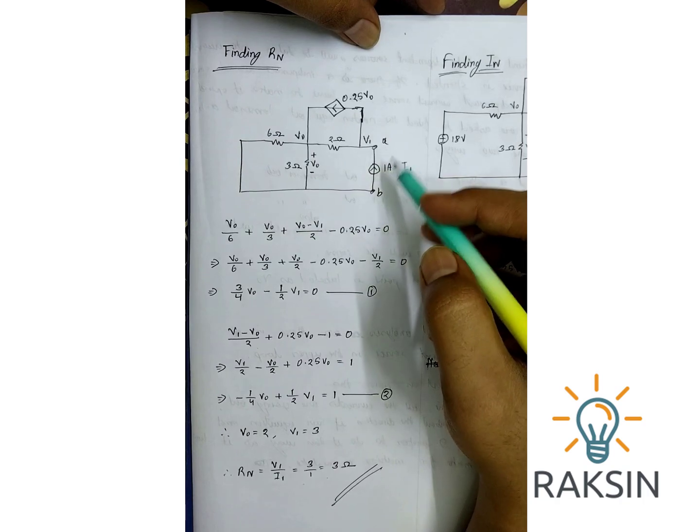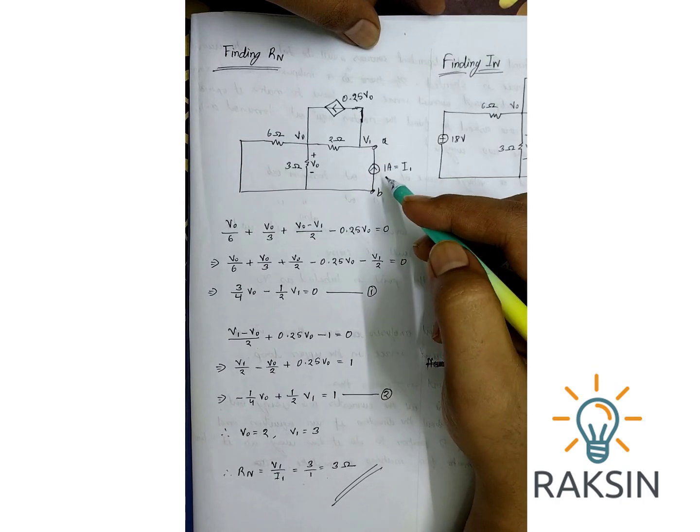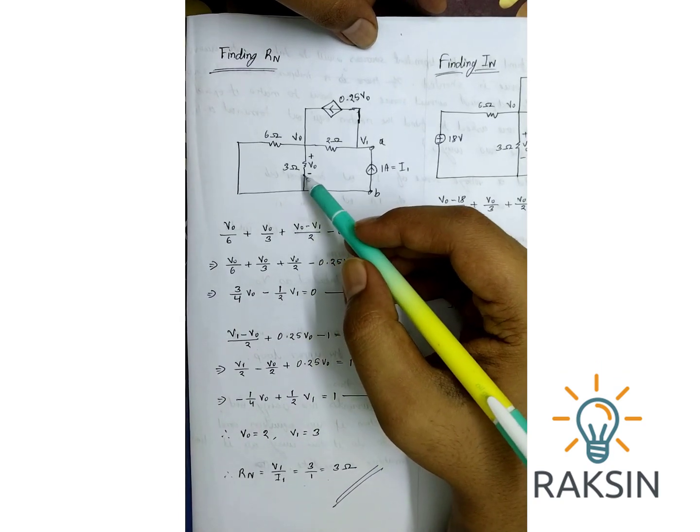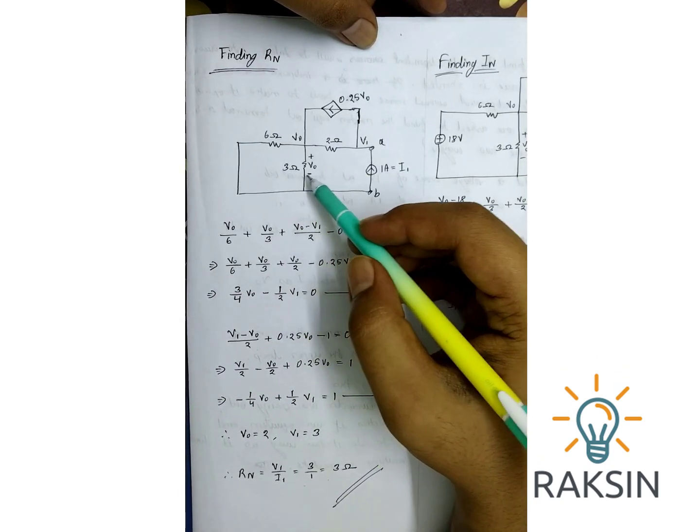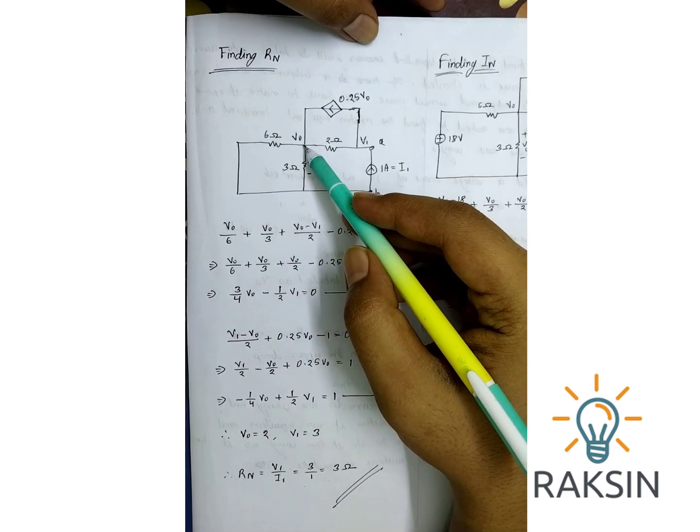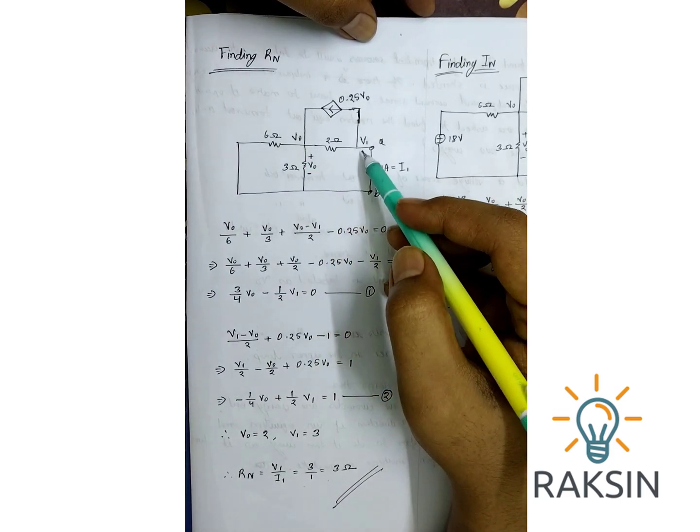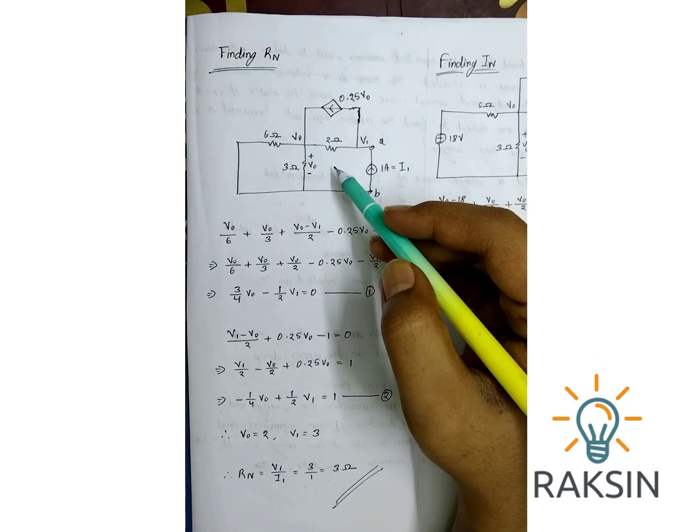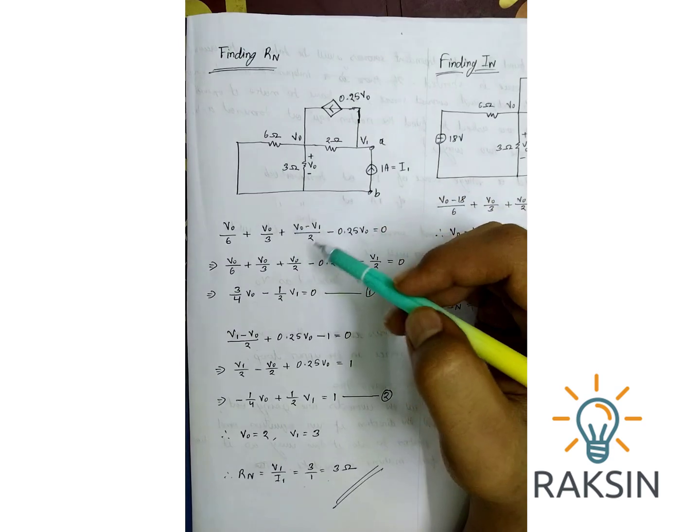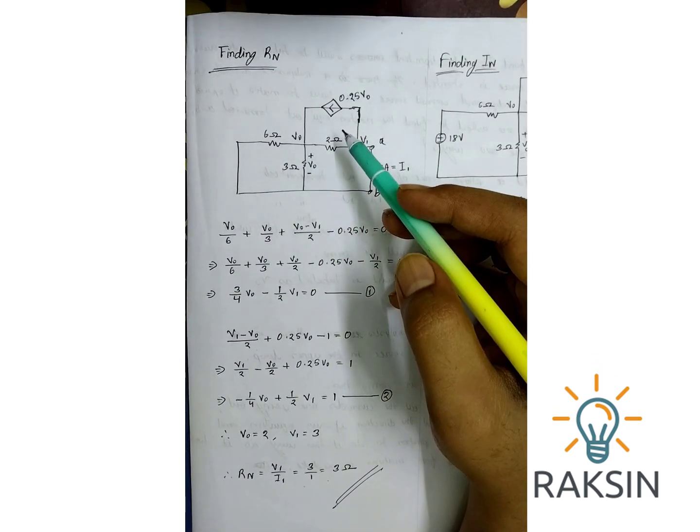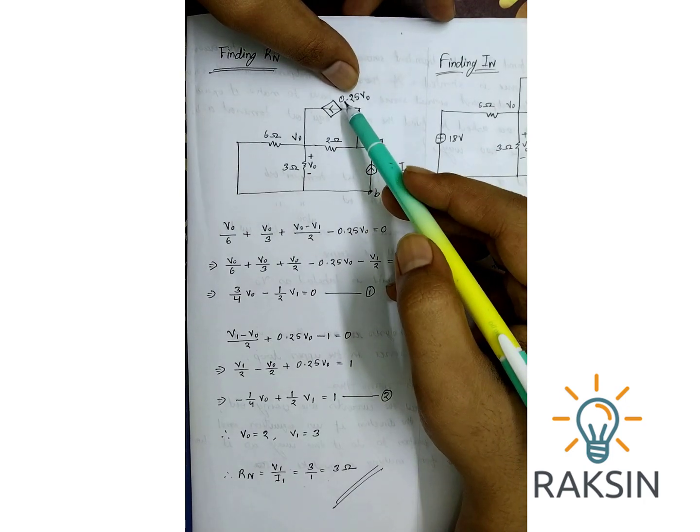We can see the voltage of this 3 ohm resistance is labeled as V0. So in this node the voltage is V0. Let's assume in this node the voltage is V1. Now I am going to apply nodal analysis because it will be a convenient choice as there is a 0.25V0 voltage control current source.